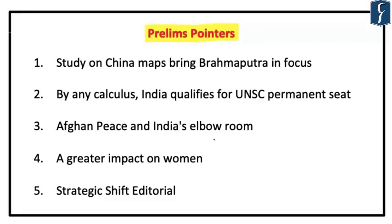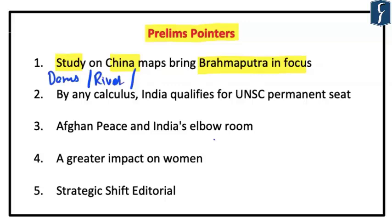Now for prelims pointers. The first news — China's dams and the Brahmaputra — is very important for prelims because of the dams, the rivers on which they are built, and the important bends after which the river enters India. You should also know the names the Brahmaputra river is given in different parts: Jamuna in Bangladesh, Brahmaputra in India, and Tsangpo or Sangpo in China. Map work is necessary for this part.